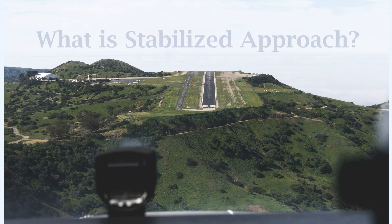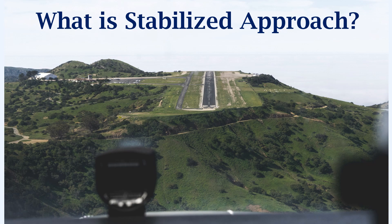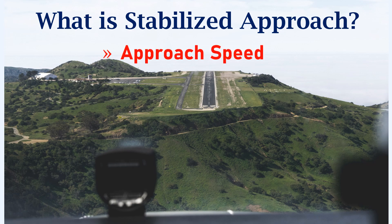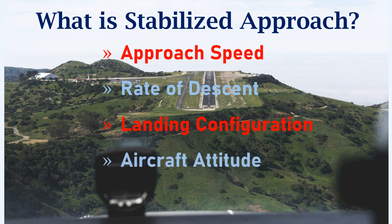So what is meant by a stabilized approach? During the approach phase, which comes just before the flare and the landing roll, if the aircraft satisfies a set of conditions, then the approach is called a stabilized approach. A few of these conditions are: approach speed, rate of descent, landing configuration, aircraft attitude, and engine thrust setting. Let's look at these conditions in more detail.